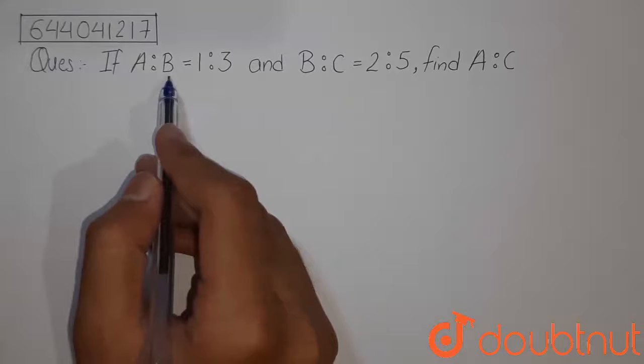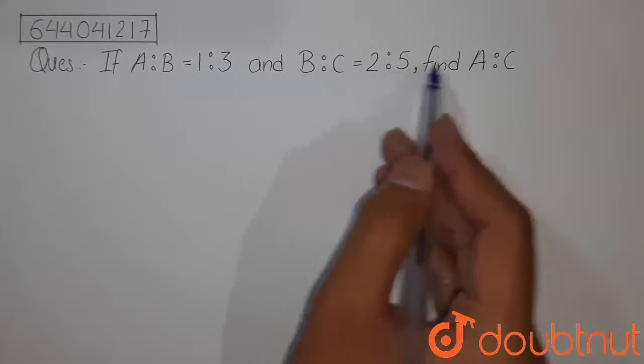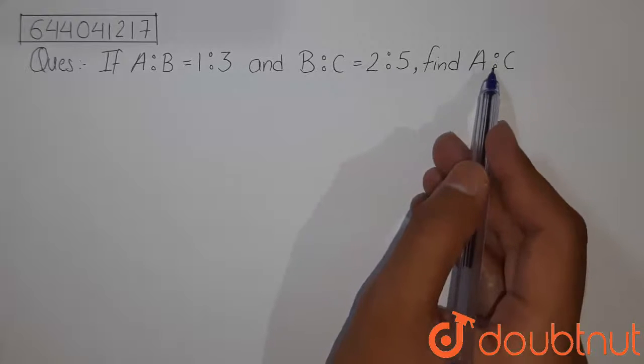Question is, if A ratio B is equals to 1 ratio 3 and B ratio C is equals to 2 ratio 5, we have to find the value of A ratio C.